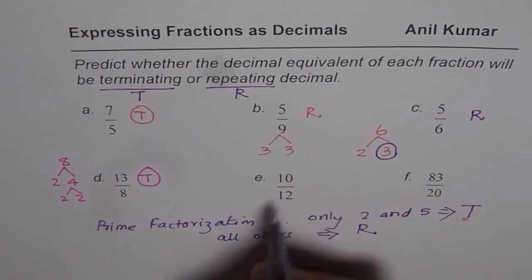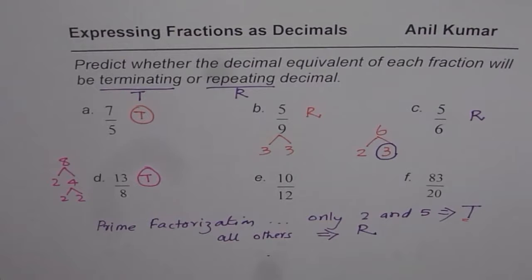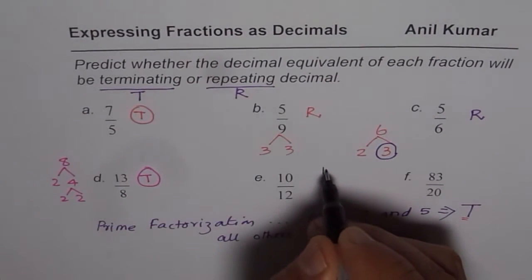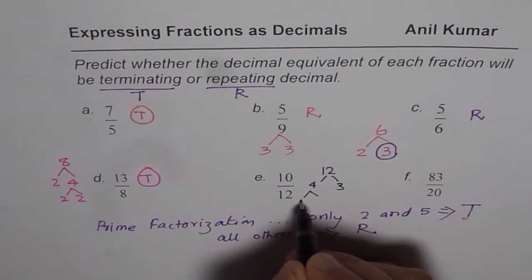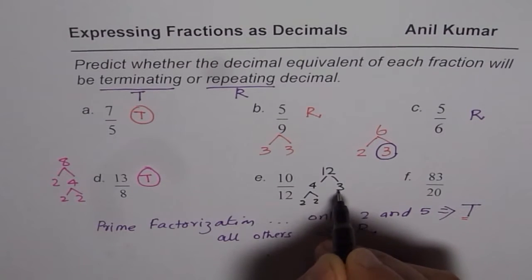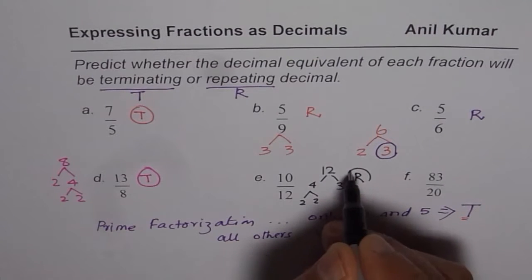Next one, 12. Now in case of 12, we could say 12 is 4 times 3 and 4 is 2 times 2. But we have a factor 3, which makes it repeating. Do you get the idea?